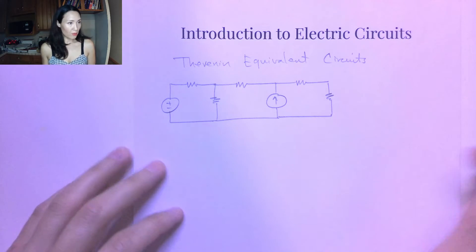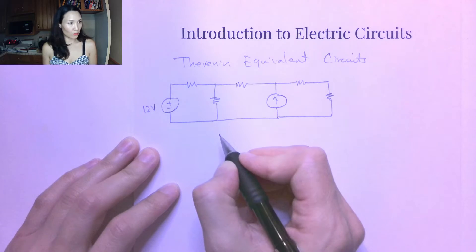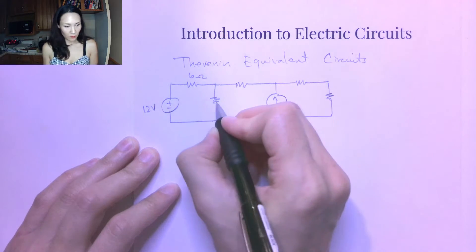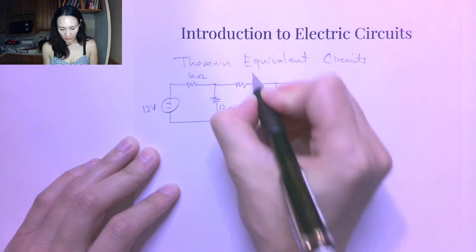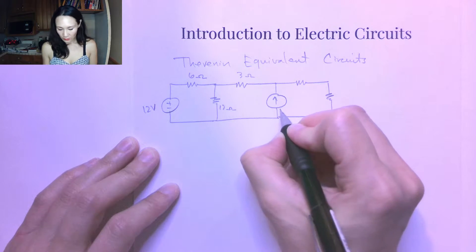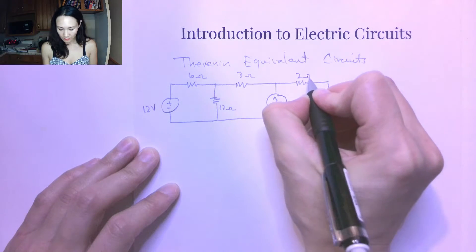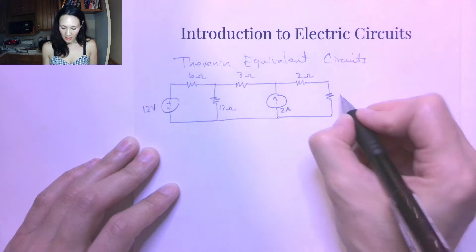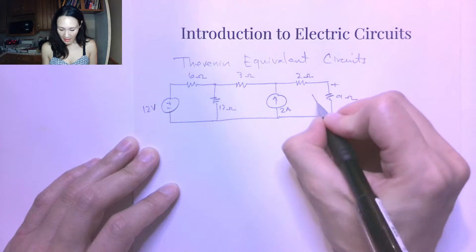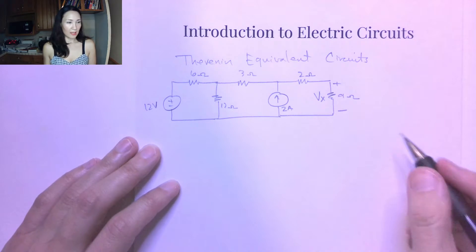Suppose we have a circuit like this. Let's let this be a 12-volt source, this is 6 ohms, this is 12 ohms, this is 3 ohms. We have a current source of 2 amps, and this is 2 ohms. And here we have a 9-ohm resistor. Suppose we are asked to find the voltage drop across the 9-ohm resistor.